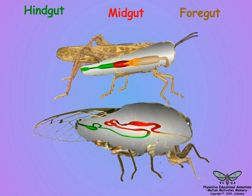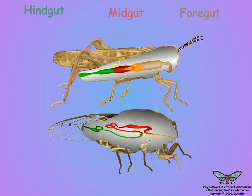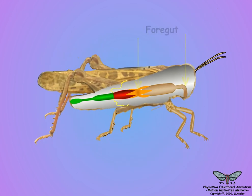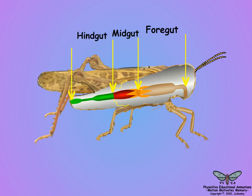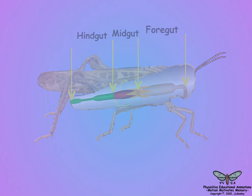With these general concepts in mind, let us now take a tour of the insect digestive tract and its functions. The insect digestive system is divided into three major sections: the foregut for acquiring and storing food and starting digestion; the midgut for further digestion and uptake of the digested nutrient molecules; and the hindgut for excretion of non-nutrient material. Each section of the digestive system will be explained in more detail.